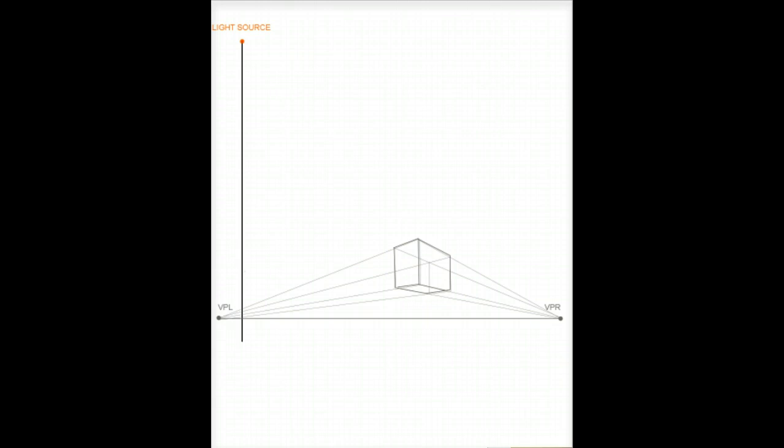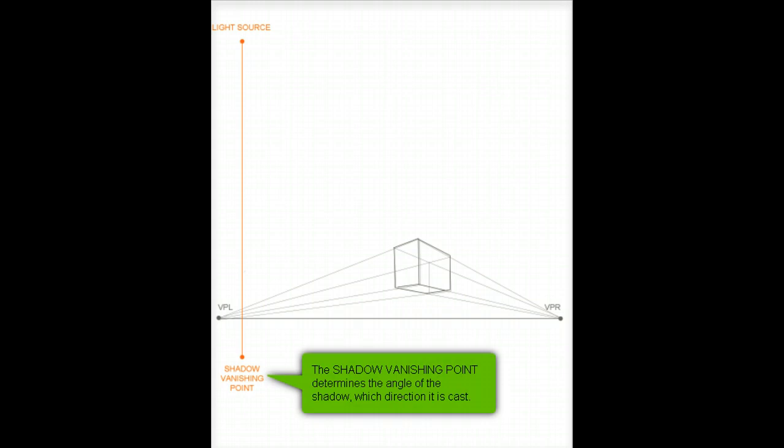The other part you need to create cast shadows in perspective is you need the shadow vanishing point, which is always located directly below the light source, vertically below. And it can either be on the horizon line or slightly below the horizon line. The shadow vanishing point determines the angle of the shadow or which direction the shadow is cast.